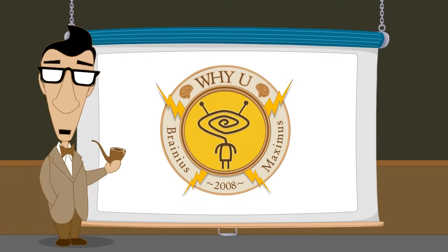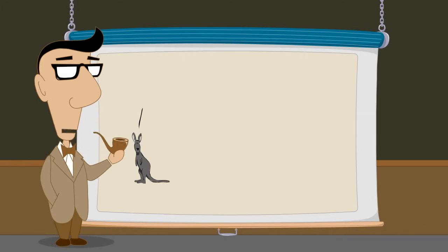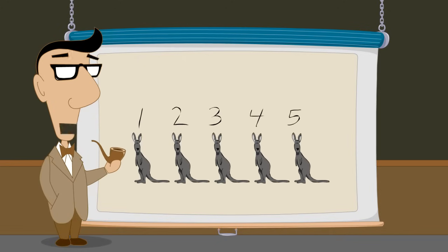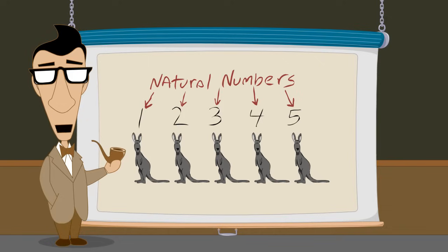Hello, I'm Professor Von Schmohawk and welcome to Why U. In the previous lectures, we explored some examples of the earliest number systems which were used primarily for counting objects. These counting numbers are called natural numbers.